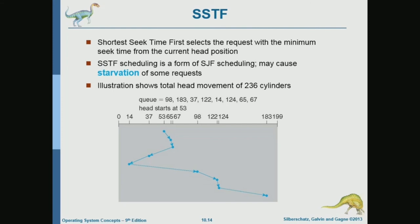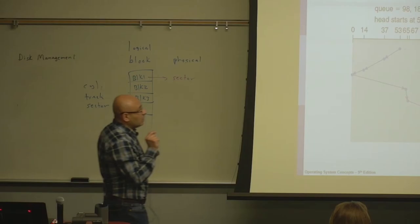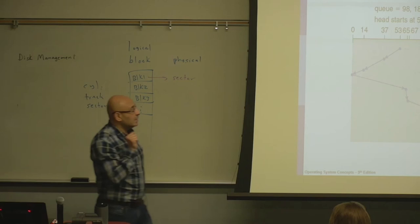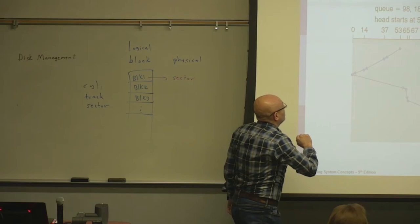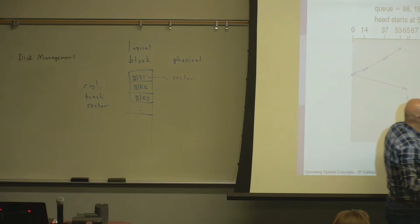Any priority-based algorithm will result in starvation. In order to avoid starvation, people came up with SCAN — an algorithm based on scanning. It would go and scan the disk in both directions, servicing requests as it encounters them. So if the head is currently here, it will scan and service any request it encounters — it will encounter 37 and service it, then continue scanning, encounter 14 and service that, then scan in the other direction and service those requests as it encounters them.